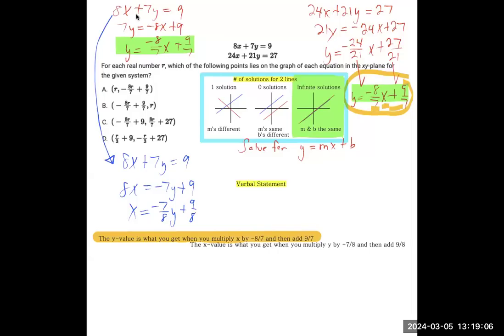And we're going to do the same thing for the other expression, where we're going to say the x value is what you get when you multiply y by negative 7 over 8, and then add 9 over 8 to that. So that does match right here. It says the x value is what you get when you multiply y by negative 7 over 8, and then add 9 over 8 to that.